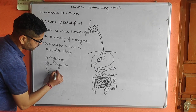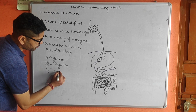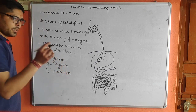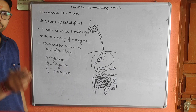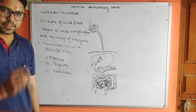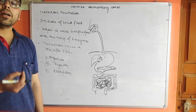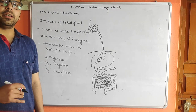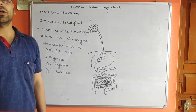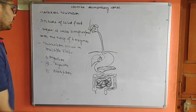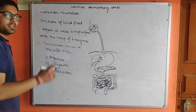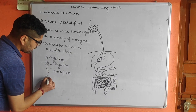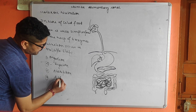The third step is absorption. Absorption means that wherever the food is digested in the body, it is absorbed by the cells so that it can be transported to different parts of the body. So absorption is the intake of digested food. The fourth step is assimilation.